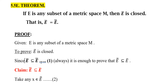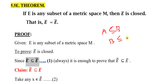Since Ē is always a subset of E̅̅, it is enough to prove that E̅̅ is a subset of Ē. To show two sets are equal — A equals B — we show A ⊆ B and B ⊆ A. So we already have Ē ⊆ E̅̅.